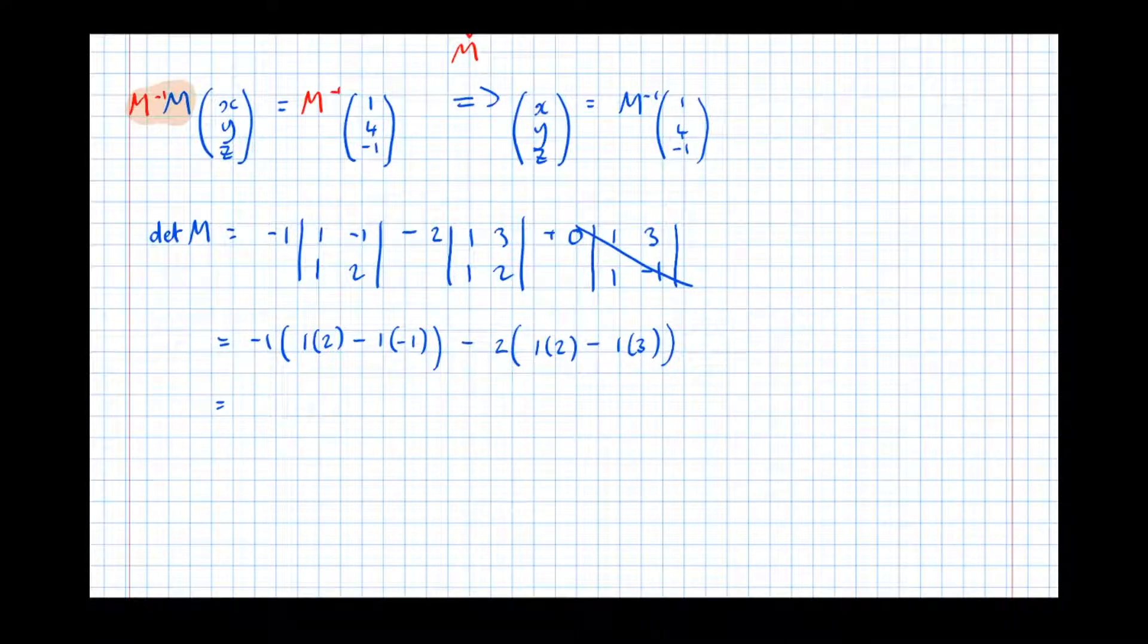So we've got 1, 1, 3, -1 remaining. So carrying on with that, we get -1. So find the determinant of 1, 1, -1, 2. We get 1 times 2, take 1 times -1. Then take 2 lots of, then 1 times 2, take 1 times 3. And the 0 we'll ignore. That disappears. Equals, so 2 add 1 is 3, so -1 times 3. Take 2 lots of 1 times 2, take 1 times 3. -1 equals -3 plus 2 equals -1. The determinant is -1.